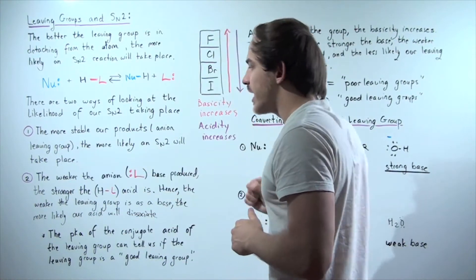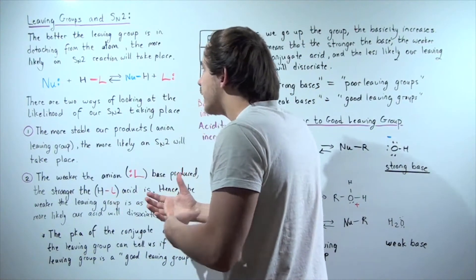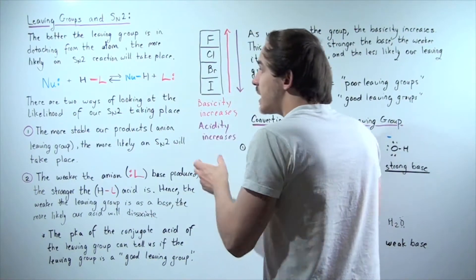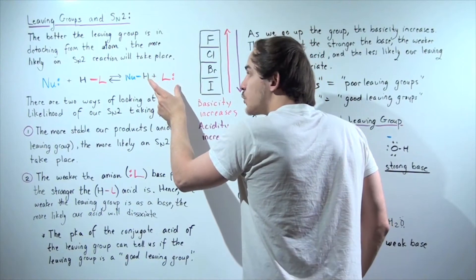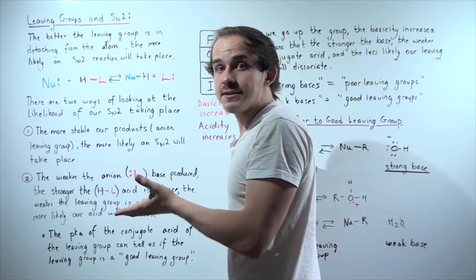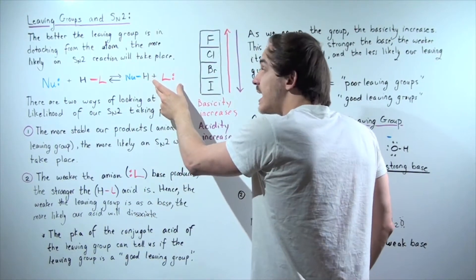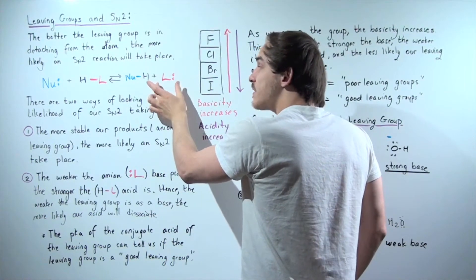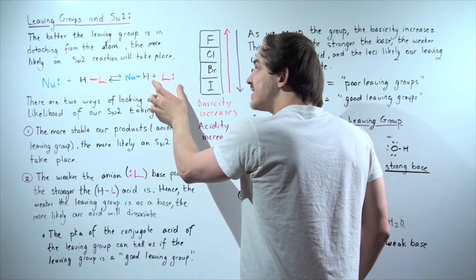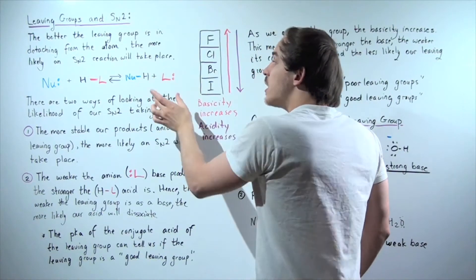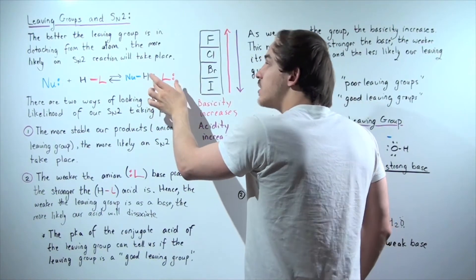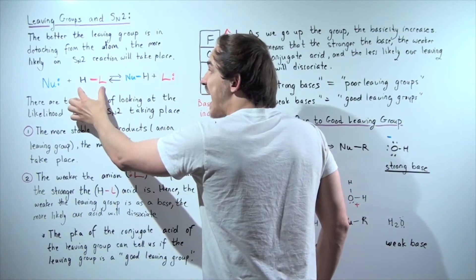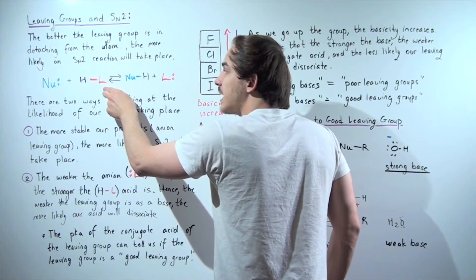Now let's look at the second way. We can talk about acids and bases — specifically bases and their conjugate acids. We can look at this leaving group as a base. If this is a very weak base, that means its conjugate acid is a strong acid. So the weaker this base is, the stronger the conjugate acid is, and the more likely it is to dissociate.